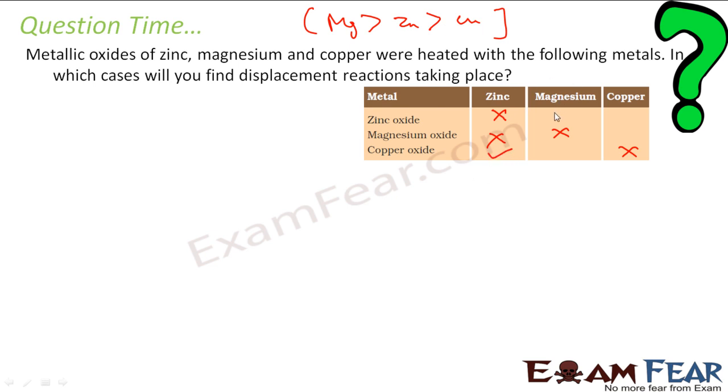Magnesium. Will magnesium displace zinc oxide? Yes, it can, right, because magnesium is stronger than copper. Will magnesium displace copper? Yes. Magnesium can displace because magnesium is stronger than copper. Will copper displace zinc? Copper is weaker than zinc? No. Will copper displace magnesium? No. So this is my solution. Very simple. We just need to know reactivity.